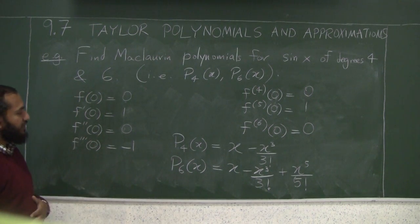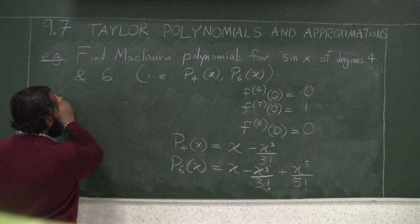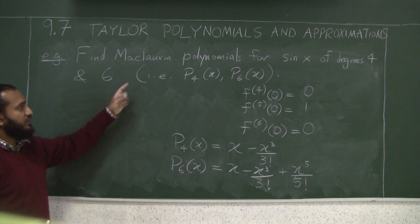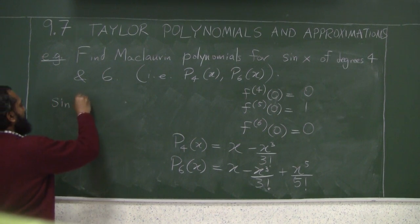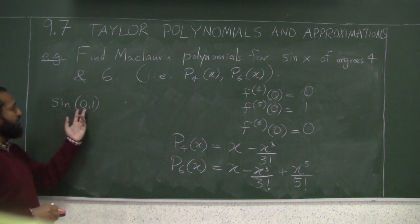And so now, what will be the benefit of this? Here's the benefit. We did the approximation near c equals 0. Suppose you have to compute sine of 0.1 radians. 0.1 is pretty close to 0.